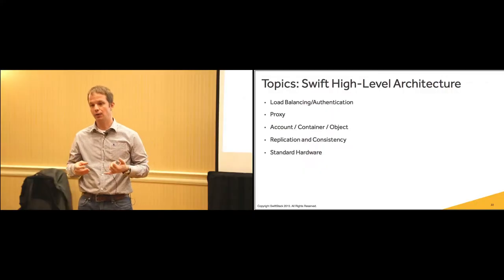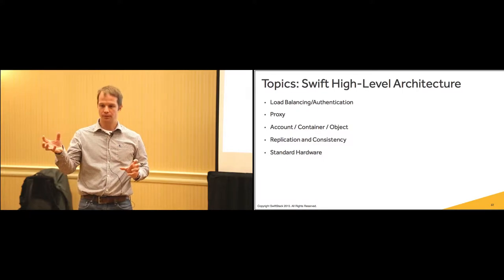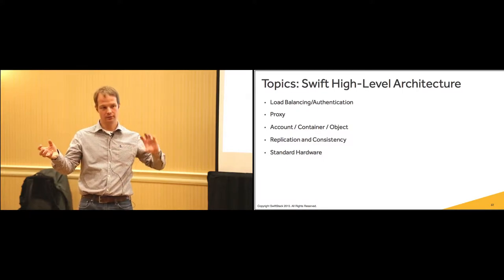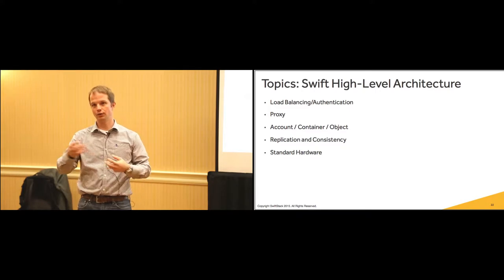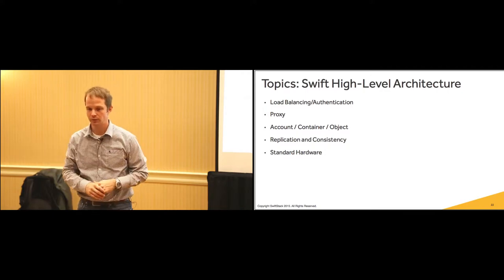The container service manages container databases and stores them to disk. The account service manages account databases. Deeper down are replication and consistency services - other daemons running on your cluster, checking things like bit rot, drive loss, and triggering replication to create more copies when a node or region is lost. This is separate from the other cluster pieces to provide performance even while replication is happening - it's not the same thread or software, and can be run on separate servers. You don't have to run proxy on the same server as container or object services.